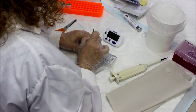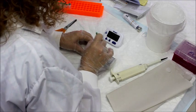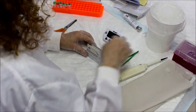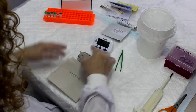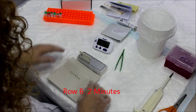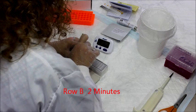Use tweezers to pierce the foil in the next row, which would be row B, and insert comb for two minutes. Gently shake off excess liquid from the comb teeth onto a piece of tissue. Insert the comb into the next well, row C, for five minutes.